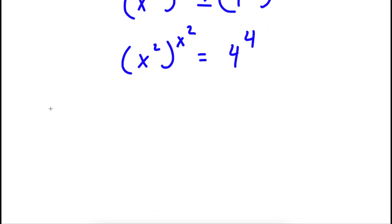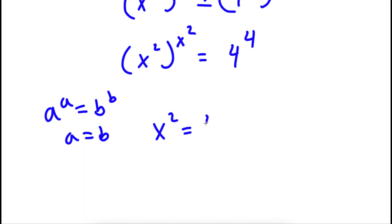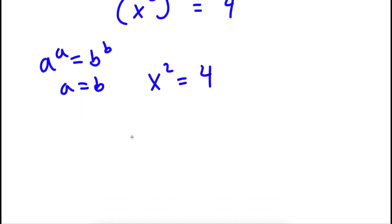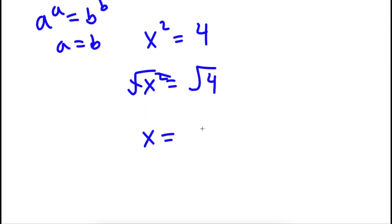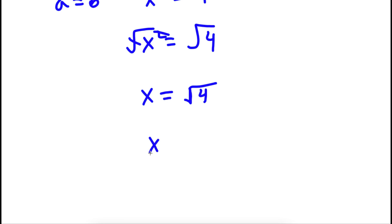Now, if I have something in the form a to the power of a is equal to b to the power of b, then this means that a is equal to b. So in this case, x squared is equal to 4. To solve this, I'm going to take the square root on both sides. These two cancel out, and I'm left with x is equal to the square root of 4, which is positive or negative 2.